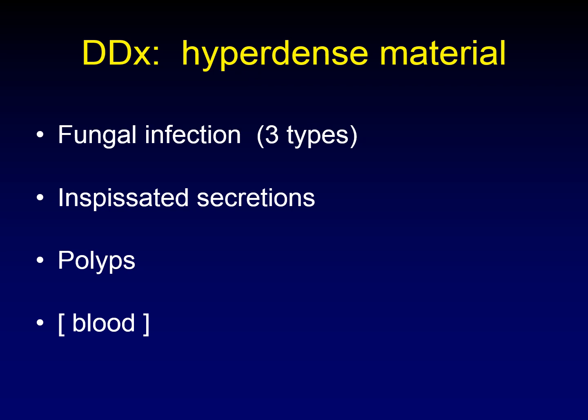Inspissated secretions — anytime they've been there a long time — can become hyperdense. And polyps: some, not all, some polyps are hyperdense relative to the surrounding mucosa. A lot of people like to include blood on this differential diagnosis, but I don't usually do that because it's so much more dense than the other things on this list, and it's usually not in the same differential.